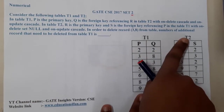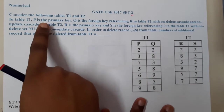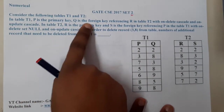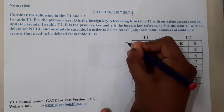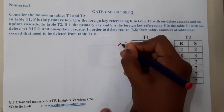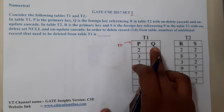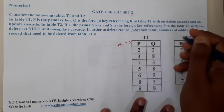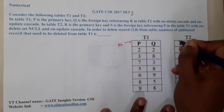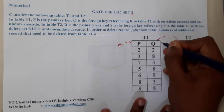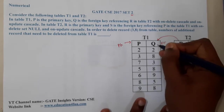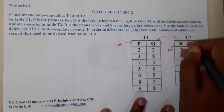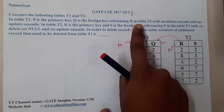The given question considers tables T1 and T2. In T1, P is the primary key and Q is the foreign key referring to R. Indirectly, R is the primary key in the other table, because if something is a foreign key in one table, it must be a primary key in the referenced table.